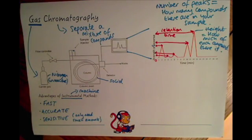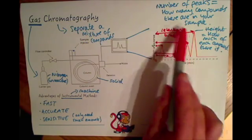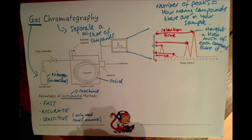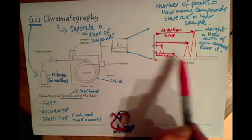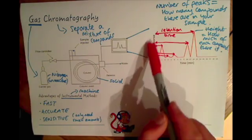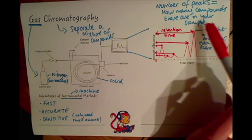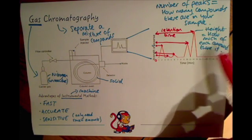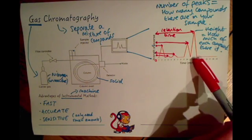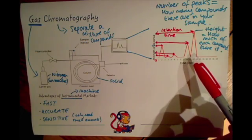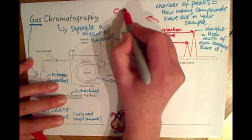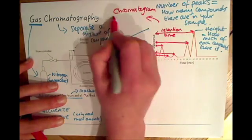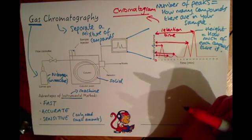The retention time tells you how long the sample took to go through the machine. That's exactly what separates the compounds, because different compounds come out at different times due to different retention times — some go through quickly, others take a little longer. So: the number of peaks tells you how many compounds are in the sample, the heights tell you how much of each compound, and the retention time is read from zero to the middle of each peak along the x-axis. This graph is called a chromatogram.